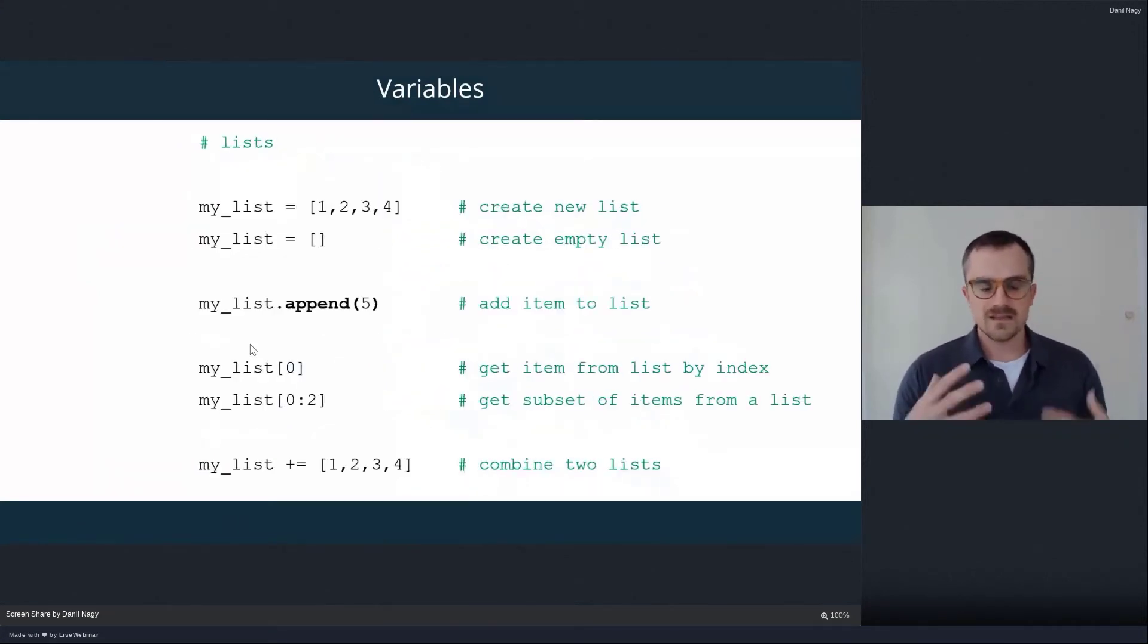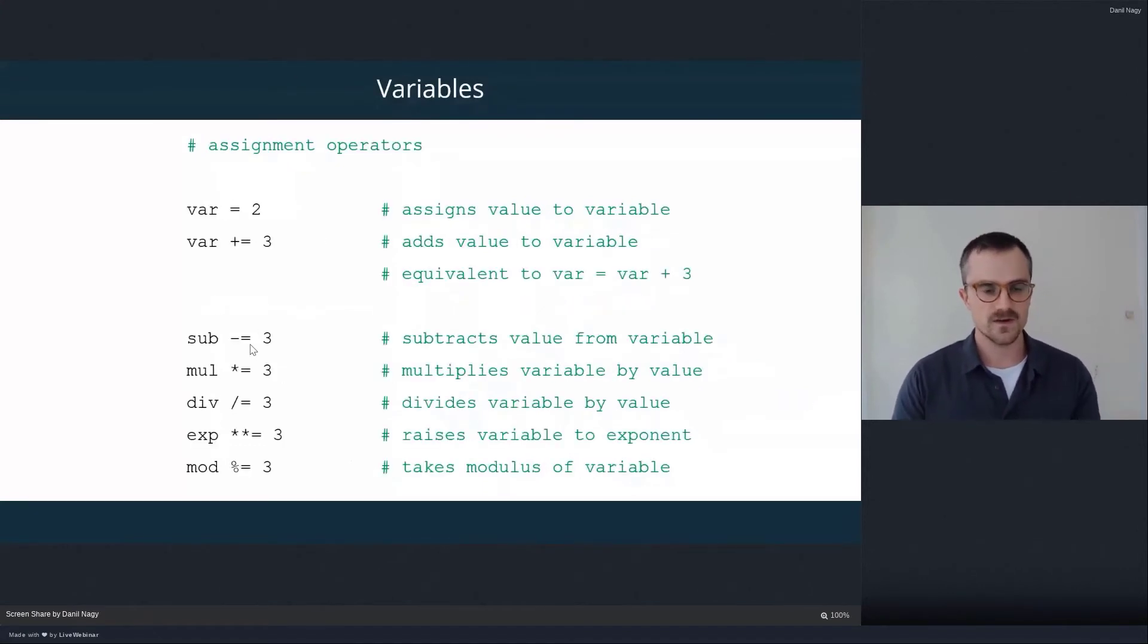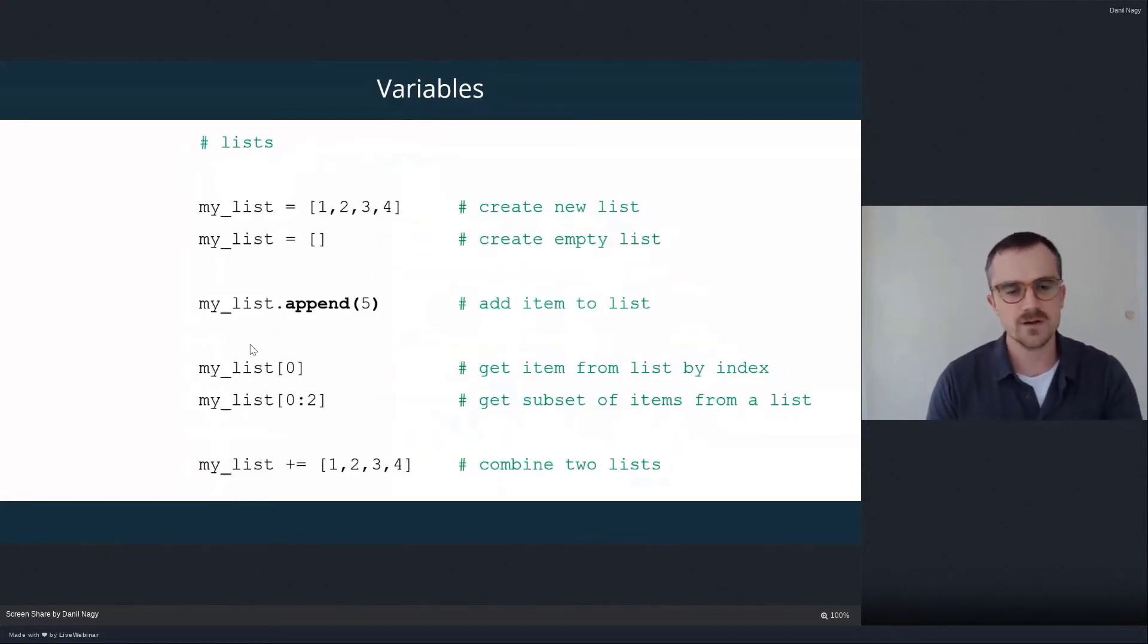So in Python, again, variables are just containers for data. And what we've looked at so far is variables that store one piece of data, like one number or one string or one conditional or one Boolean. But variables can also store multiple data elements.